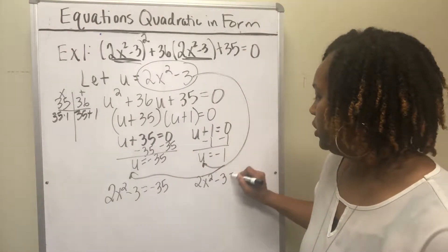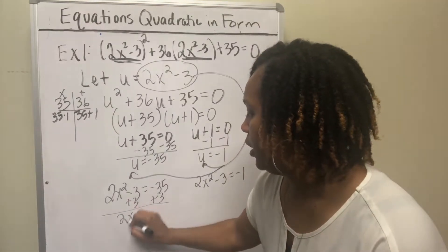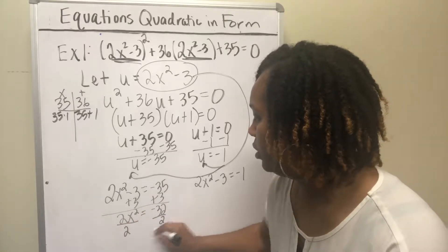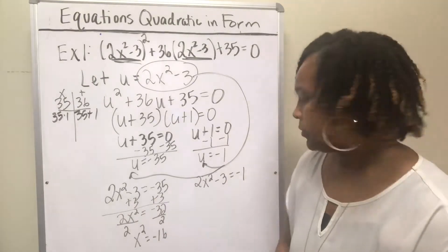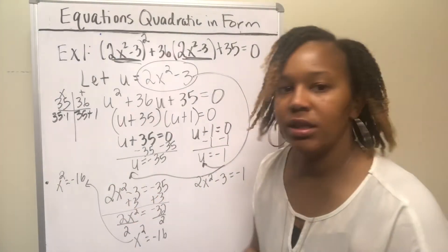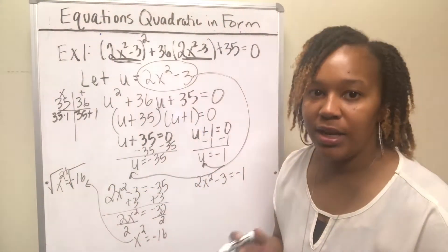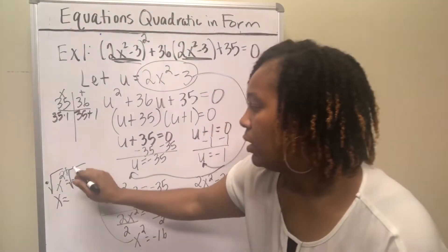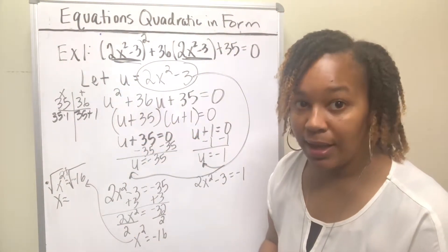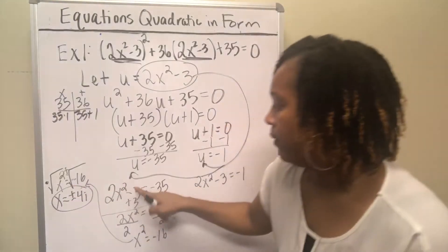You do it with each equation and then solve each for x. Add 3 to both sides: you get 2x² = −32. Divide both sides by 2: x² = −16. To get rid of the square, take the square root of both sides. Whenever you take the square root of both sides, you have to take the positive and negative square root. So x = ±√(−16). Anytime you have a negative under the square root, that's i. Pull out the negative and make it an i — the square root of 16 is 4 — so you get x = ±4i.